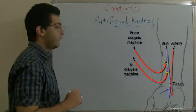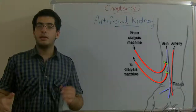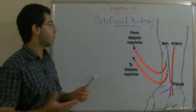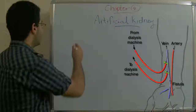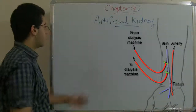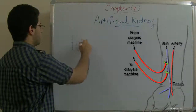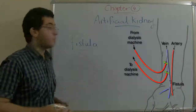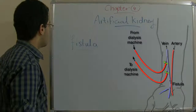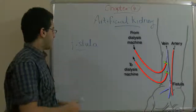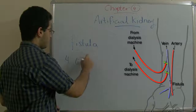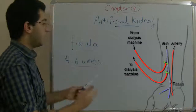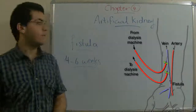There is another point. We can see that the vein and the artery are both connected to each other, and this is not naturally in the human body. This is a surgical operation to make this point of connection which is called a fistula. This fistula is important in the process of hemodialysis and takes four to six weeks in order to mature and take its shape, connecting the vein and the artery together.